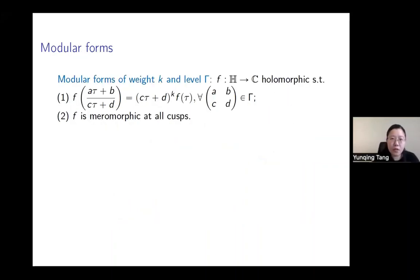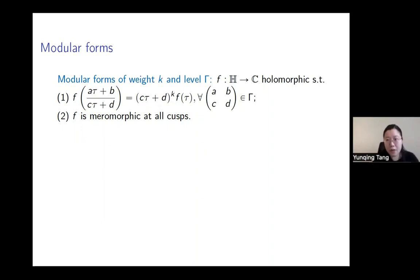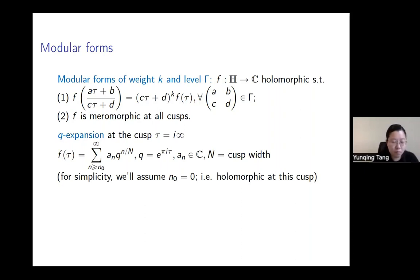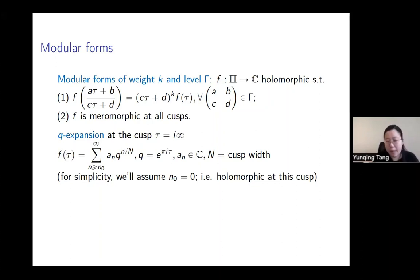More generally, we can talk about modular forms of weight k and level gamma. For today's talk, we allow modular forms which are meromorphic at the cusps. When we talk about Q-expansion, for simplicity and compatibility with the literature, we just take the Q-expansion at the cusp i∞. Since we allow meromorphicity at cusps, the Q-expansion will start from some N₀. Taking the holomorphic case at one cusp still gives the essential case of the conjecture.